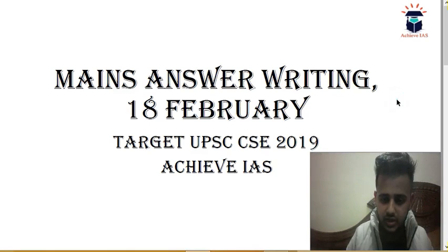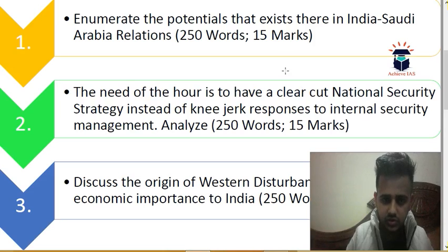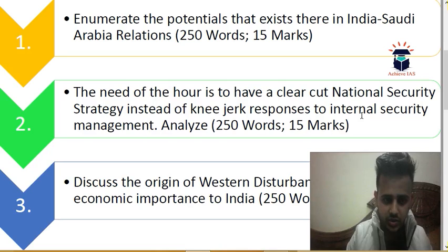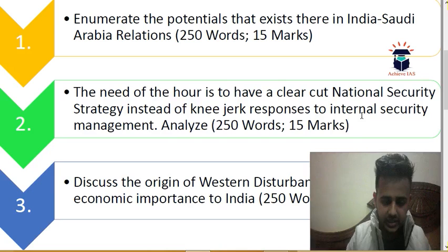Today is 18th February. So let's see what the questions are. The first question is: enumerate the potentials that exist in India-Saudi Arabia relations. Currently, the crown prince of Saudi Arabia visited India, so you have to enumerate the potentials that exist between India and Saudi Arabia. The word limit is 250 and the maximum marks are 15.